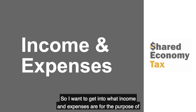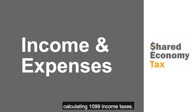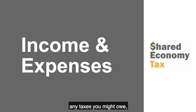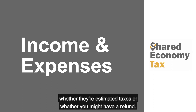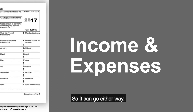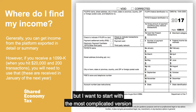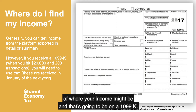I want to get into what income and expenses are for the purpose of calculating 1099 income taxes. This is going to be the cornerstone and starting point for calculating any taxes you might owe, whether they're estimated taxes or whether you might have a refund. The first question is income. Income is usually easy to find, but I want to start with the most complicated version — that's going to be on a 1099-K case.